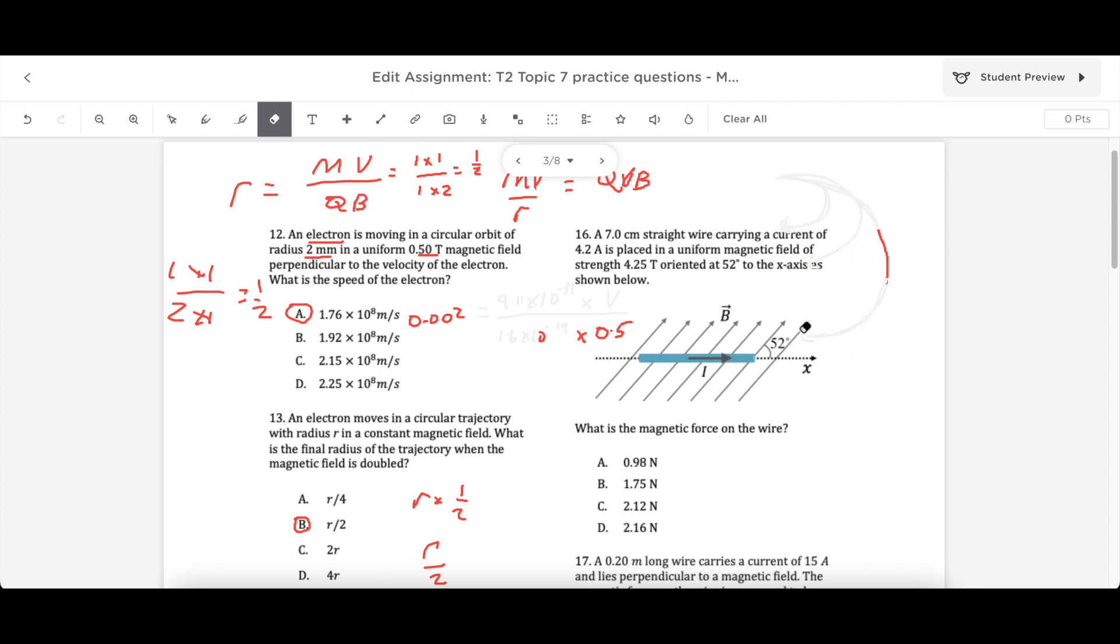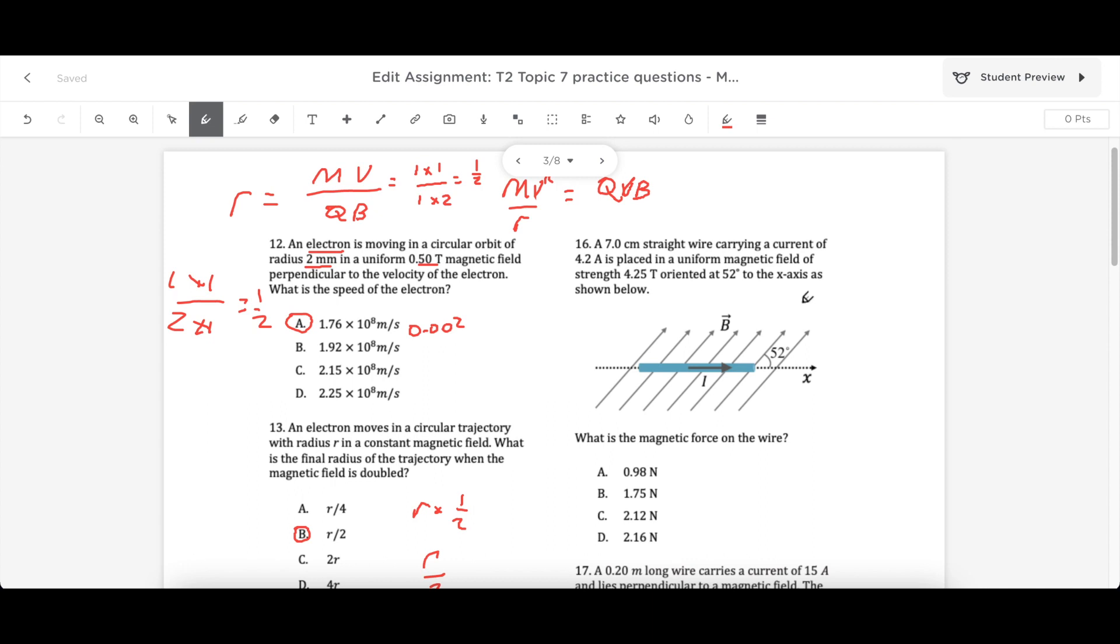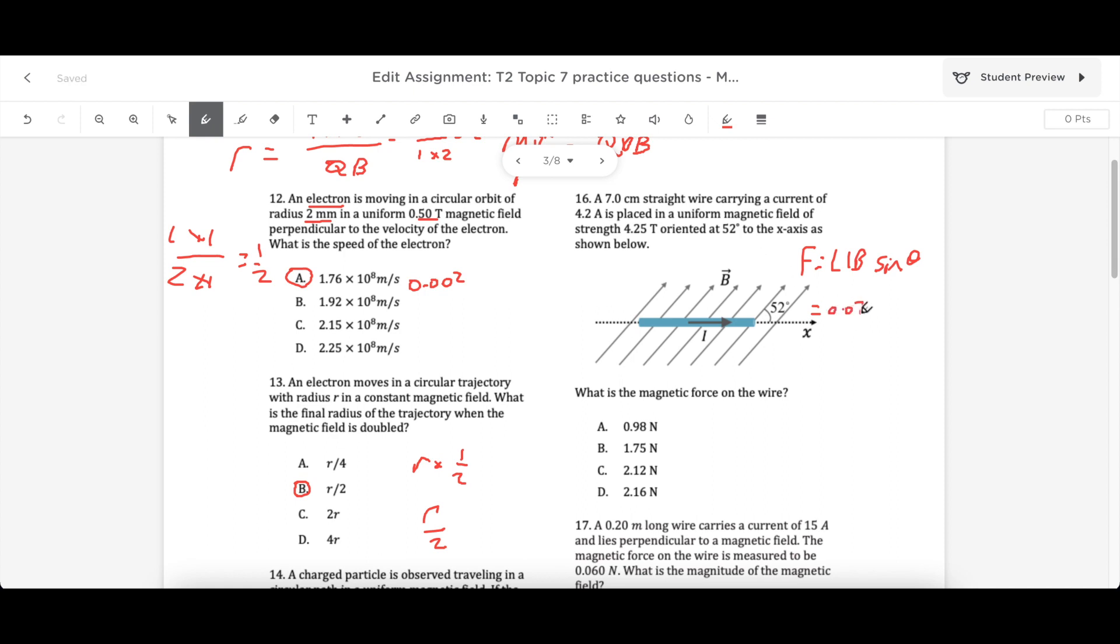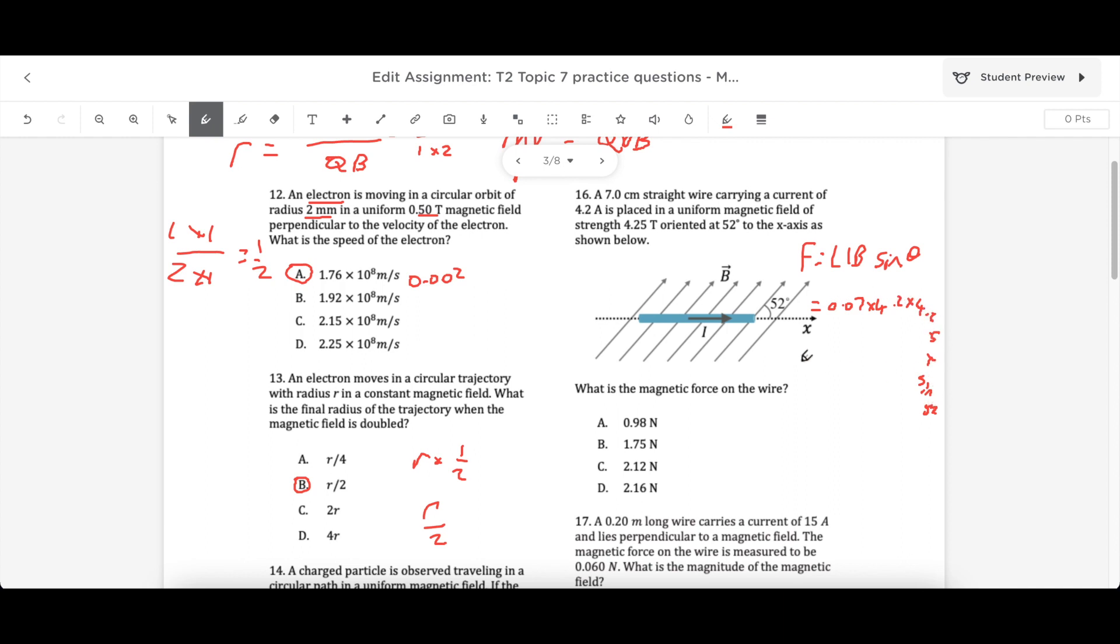So let's check this next one. Now we have a current in a wire. Current carrying wire. So no problem. As soon as I see a current carrying wire, I'm thinking LIB. F equals LIB sine theta. L-I-B. Now what do we have here? We have the length of the wire. We have the current of the wire. We have the field. We just need to find the force. We've got that angle as well. Make sure you calculate it again. Degrees. And then you will get your answer. Where are we? L is 7 centimeters. That's not good. 0.07. That's better. Multiply it by 4.2. And I'm going to multiply that by 4.25 times sine 52. If you solve that, you will get your final answer of 0.98.